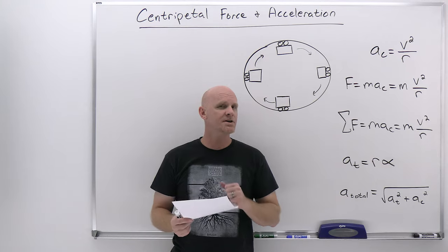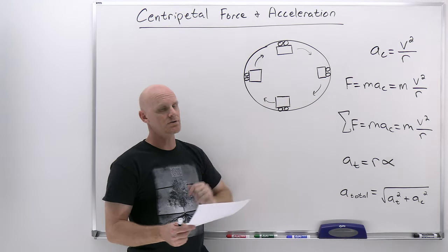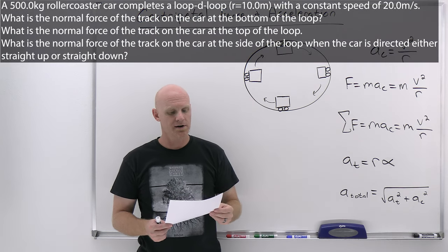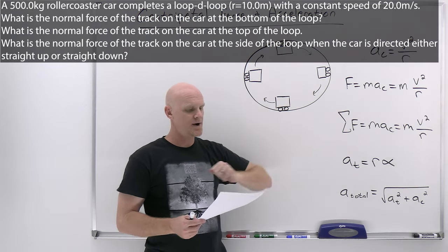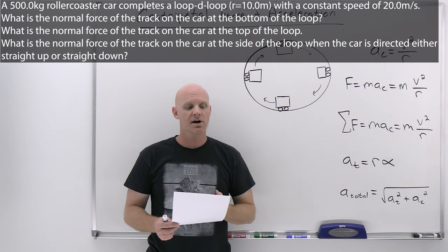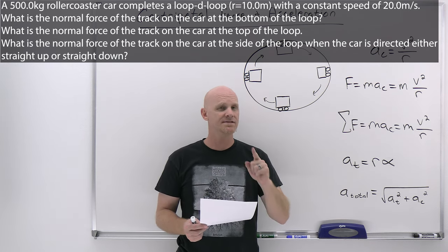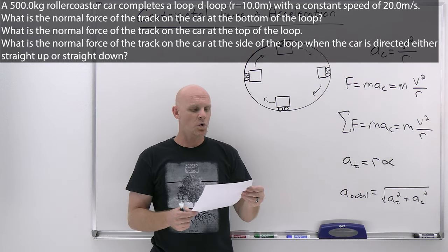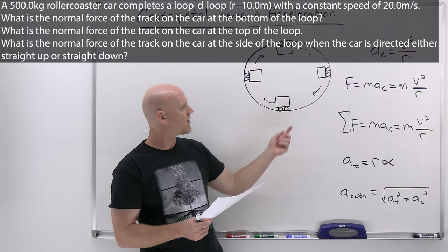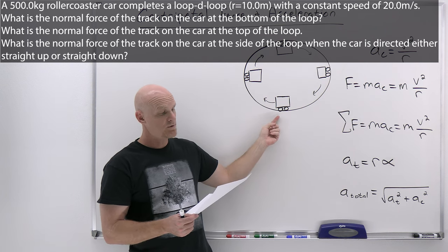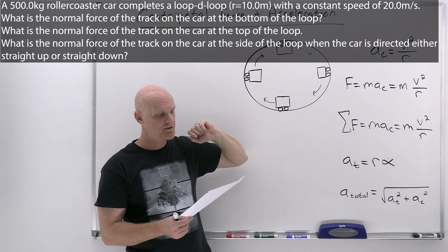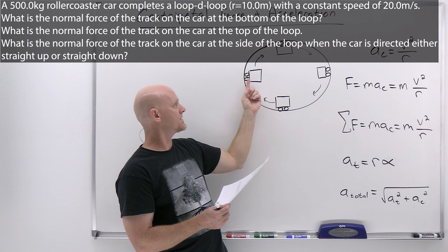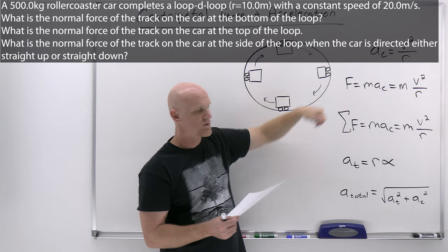The next question involves a roller coaster going around a loop-de-loop. A 500.0-kilogram roller coaster car completes a loop-de-loop with radius 10.0 meters at a constant speed of 20.0 meters per second — constant speed tells us this is uniform circular motion. Three-part question: what is the normal force at the bottom of the loop, at the top of the loop, and at the side of the loop when the car is directed straight up or straight down?